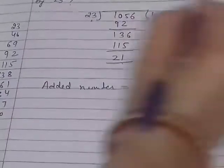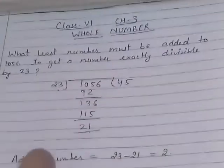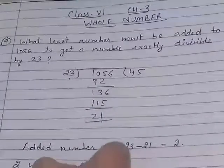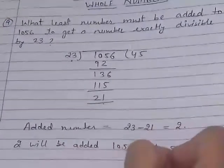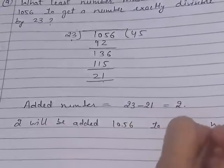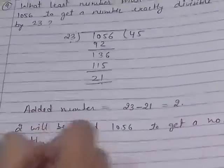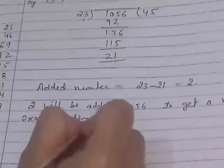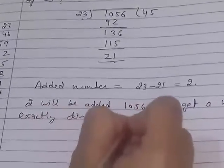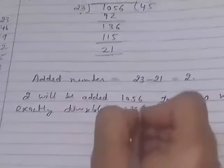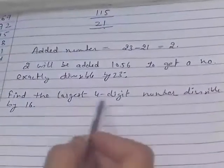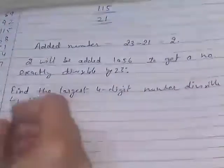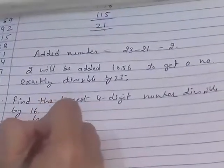What least number must be added to this? The 2 will be added to 1056 to get a number exactly divisible by 23. No need to show division again. Next, 10th question. Find the largest 4 digit number divisible by 16.